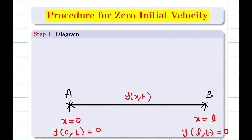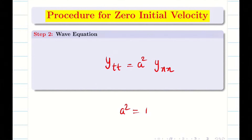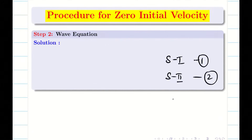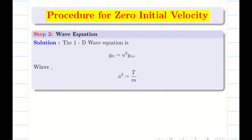Once we complete the diagram, we have the confidence to solve the problem. Step 2: we have to write the 1D wave equation. We know y double t is equal to a squared y double x, where a squared is T by m — tension by mass per unit length. In step 1 we did the drawing, so that gives 1 information. In step 2 we write the wave equation and a squared — that gives 2 informations.